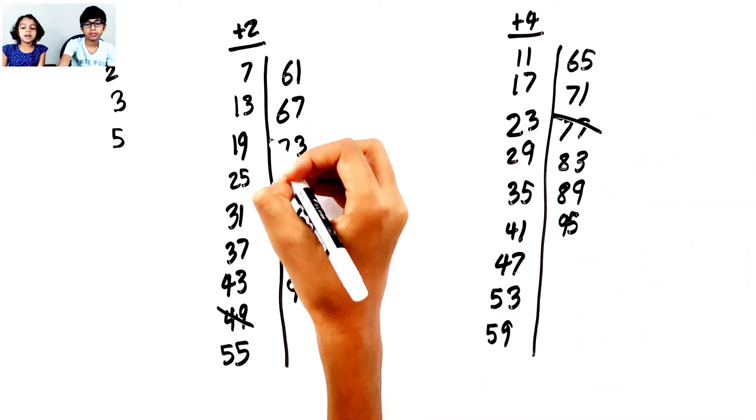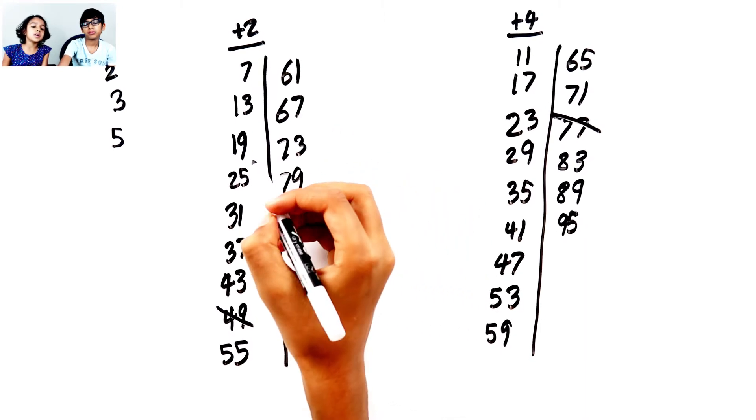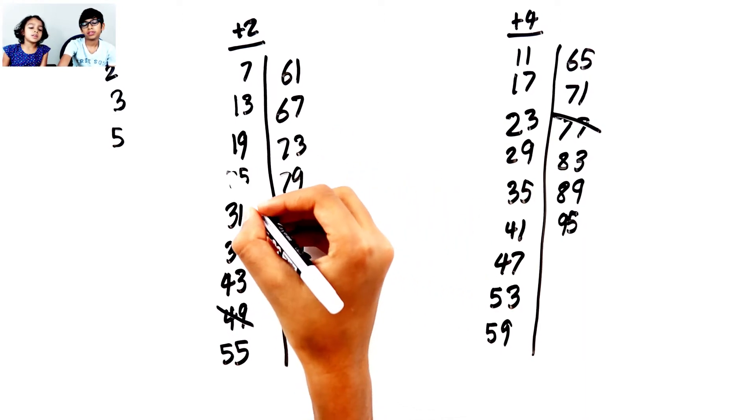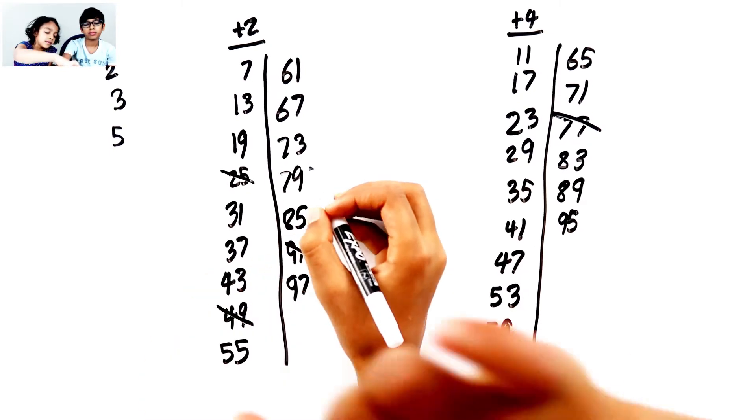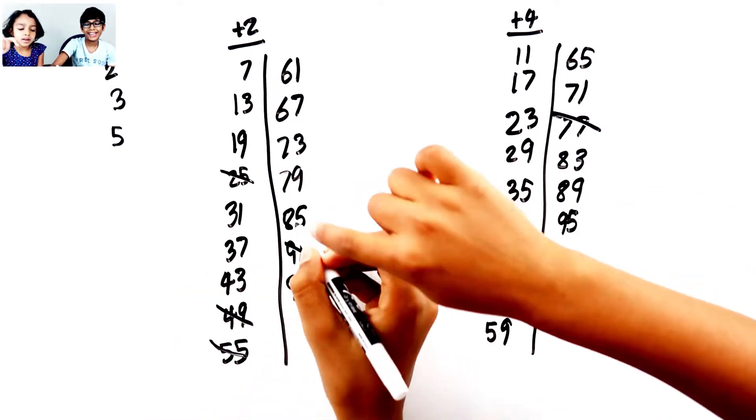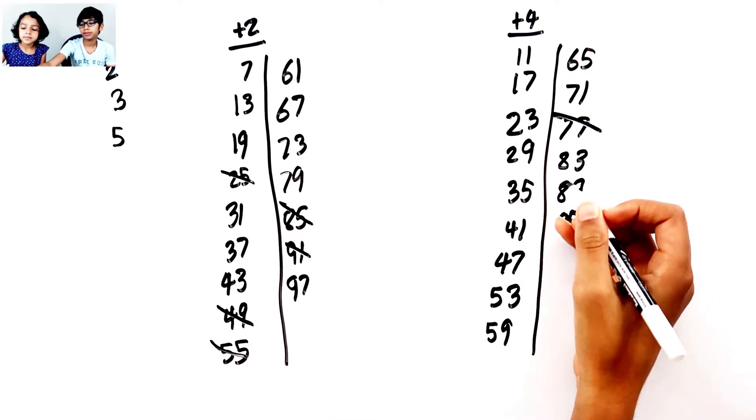And then we cross out all of the numbers that end with 5: 25, then 55, then 85, then 65, then 35, then 95. That's all.